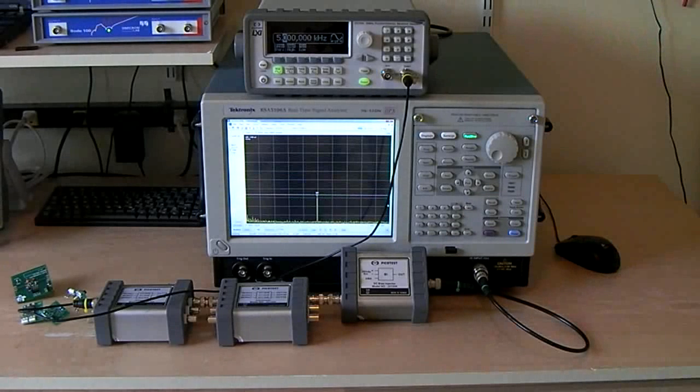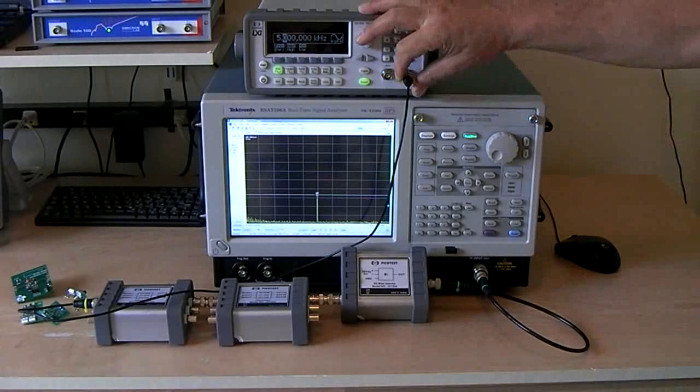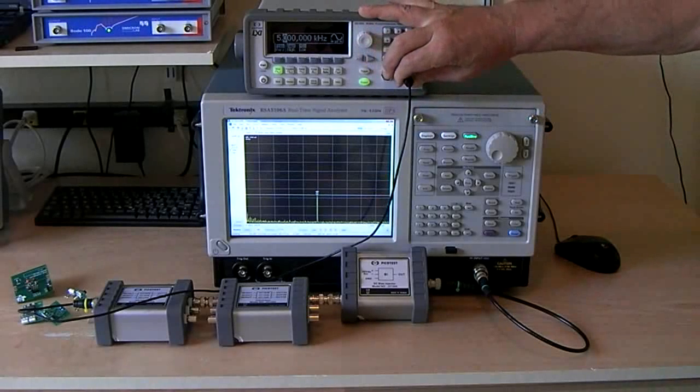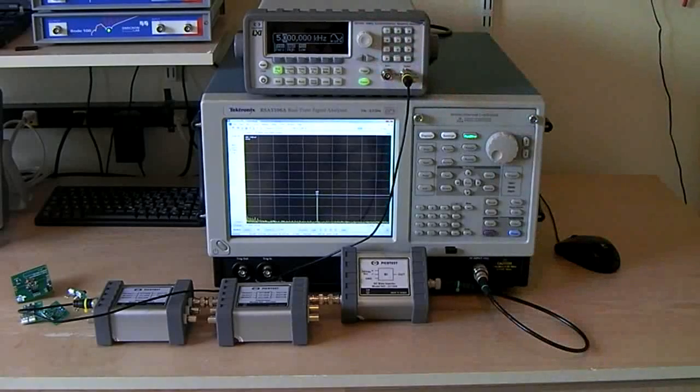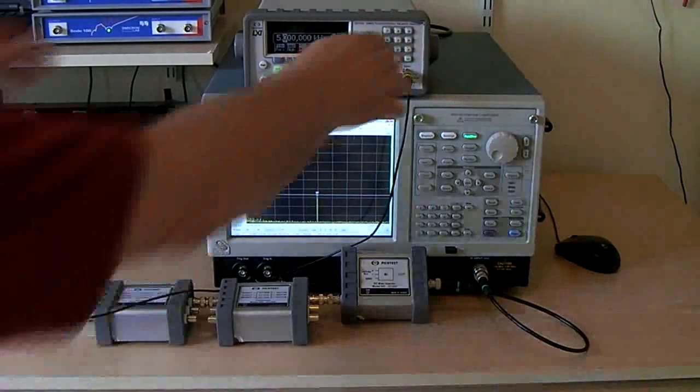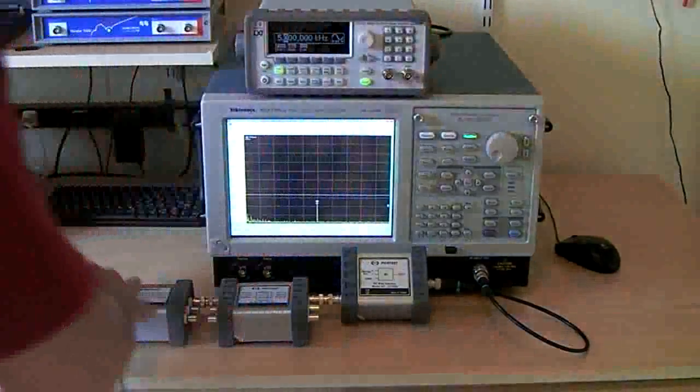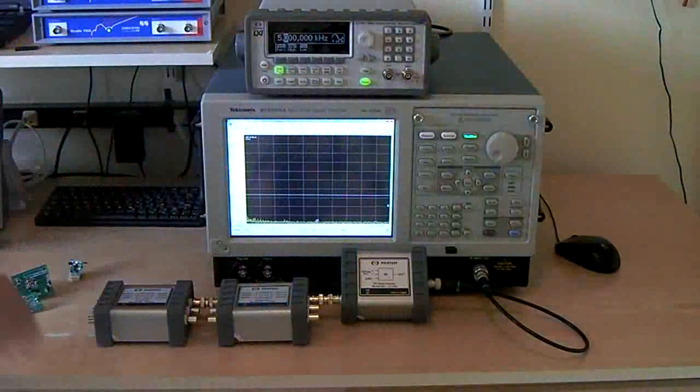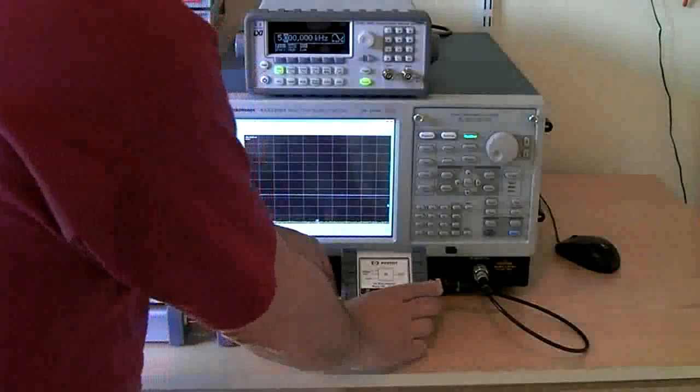Now that we have our measurement system validated, we can actually go ahead and measure real references. And so we're going to remove our AWG signal here. And we can remove our attenuators.